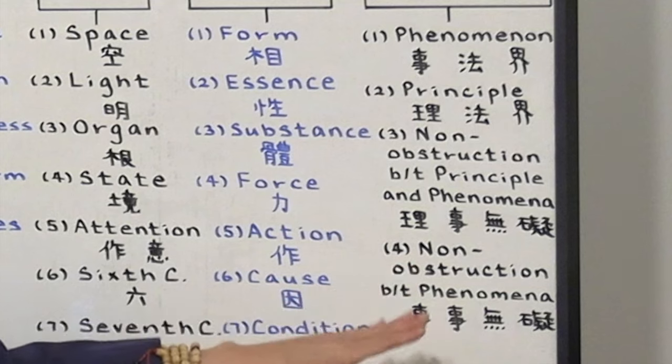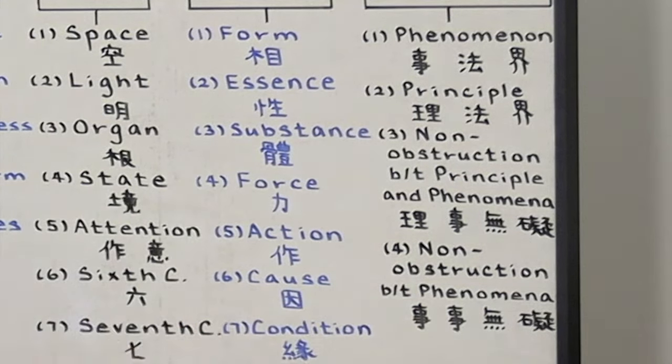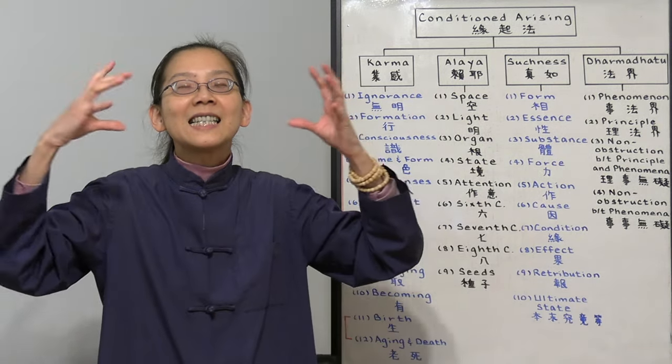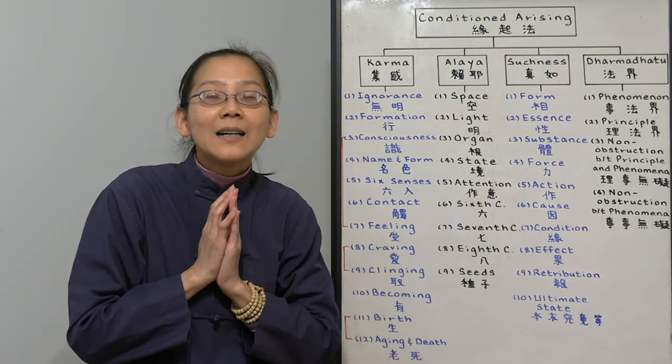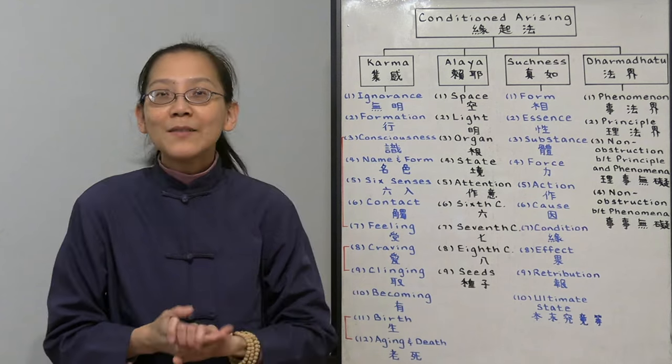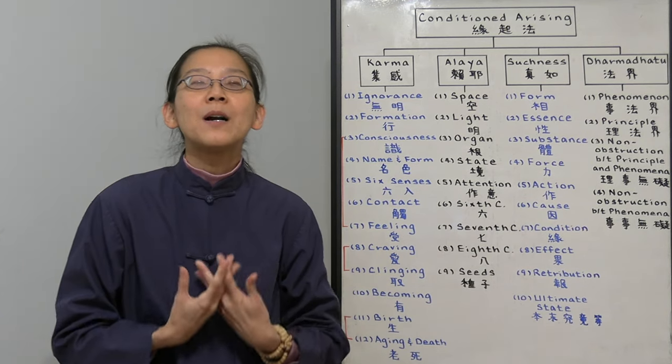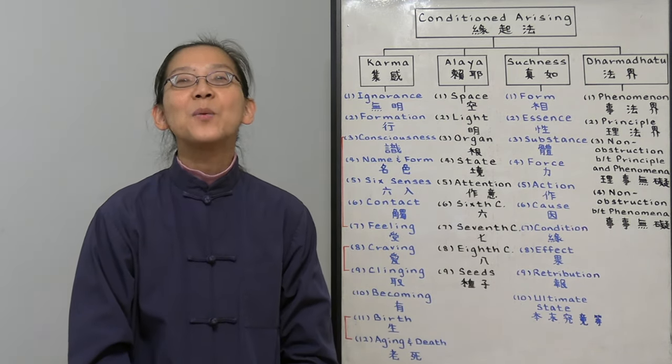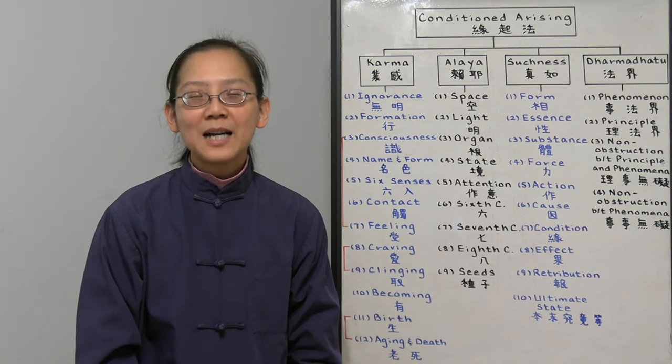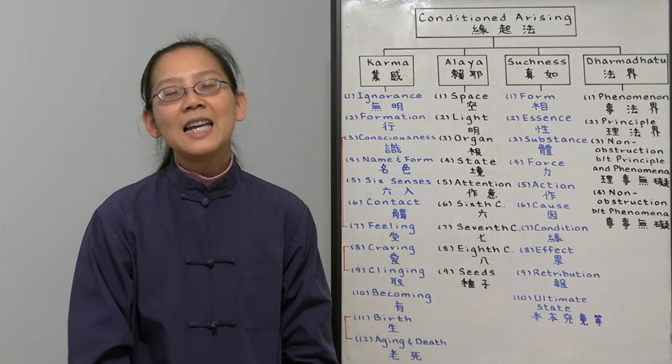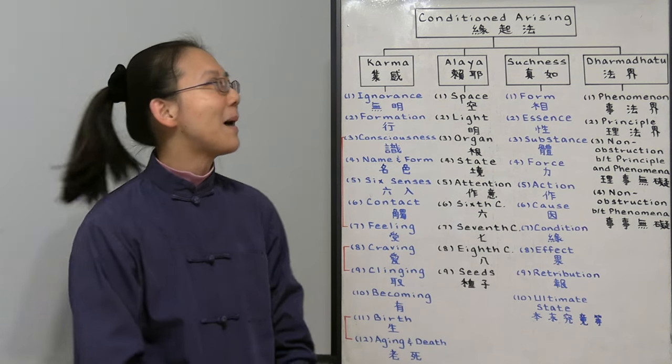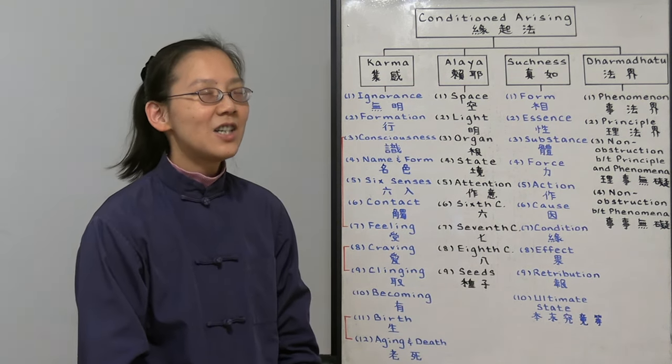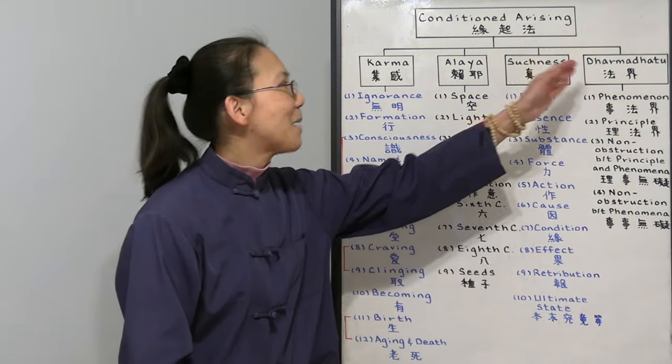For the non-obstruction between phenomena. Everything is mutually contained in each other. This hair of mine is my love. This board is my love. Everything is my perfect heart. That's the world of the Buddha. Buddha always lives in this perfect world. So we want to learn about this perfect condition arising of the Dharma Dhatu.